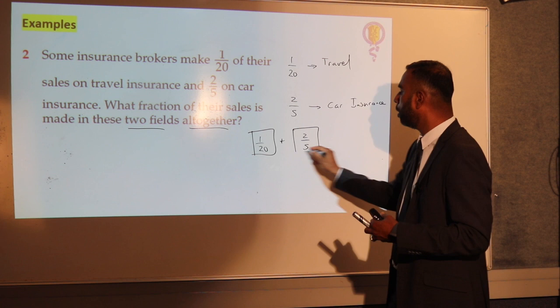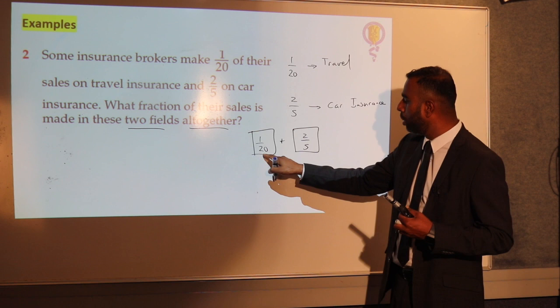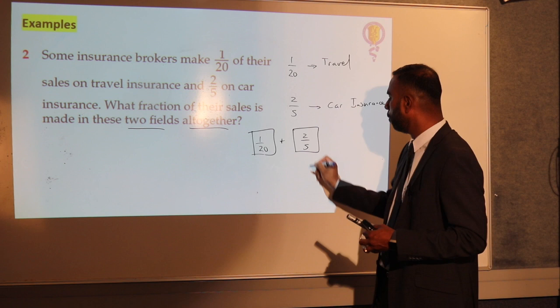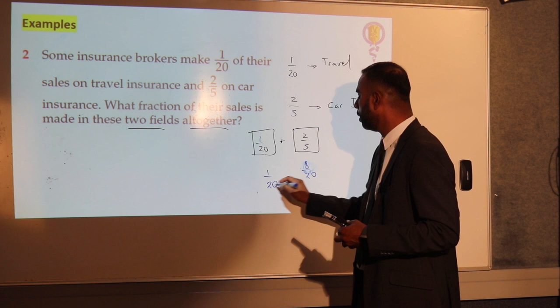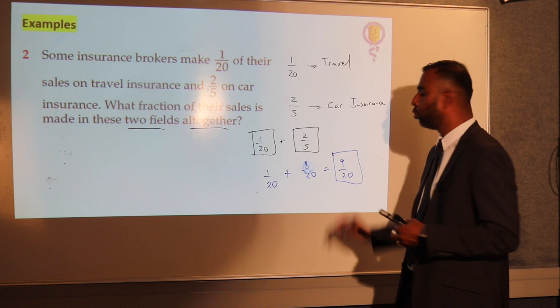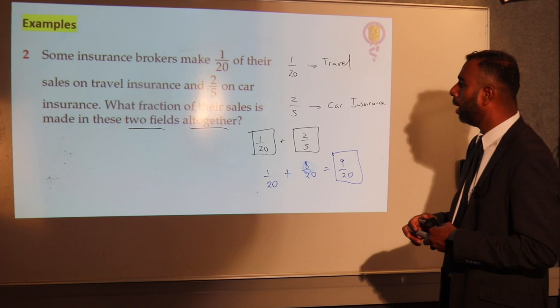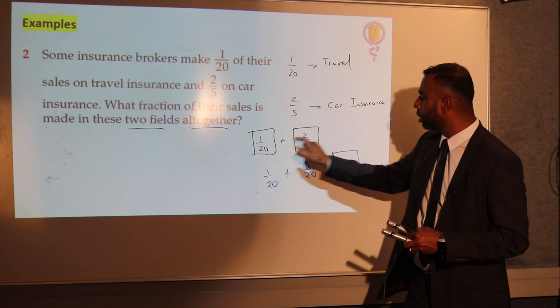We have to bring it down to a common denominator first. Between 20 and 5, I can see that 5 will go into 20, so the common denominator is 20. Therefore 2 fifths becomes 8 over 20, and 1 twentieth stays as 1 over 20. The total is 9 over 20. That's the total sales made from the two fields together. The concept is the same: two fractions, bring them to a common denominator, then add.